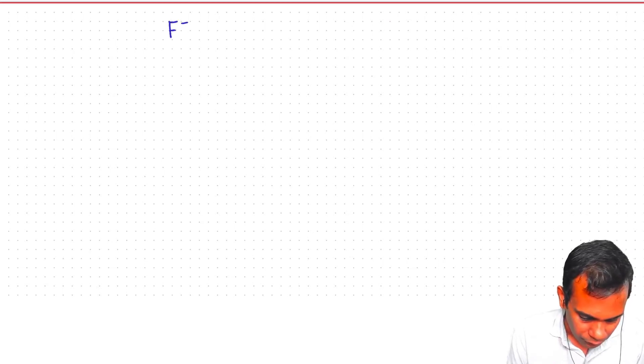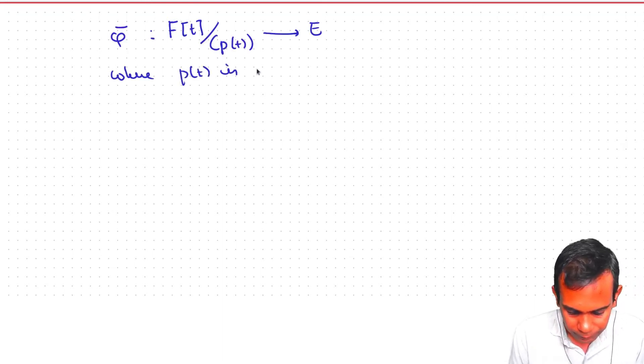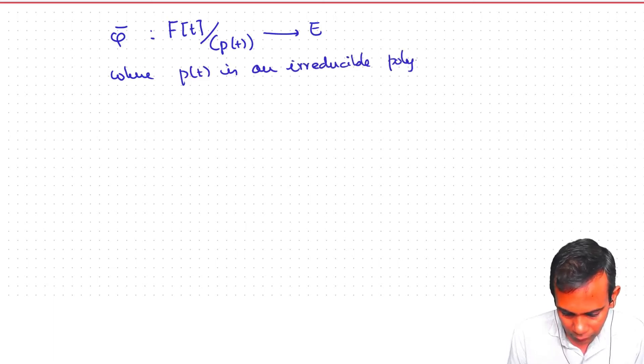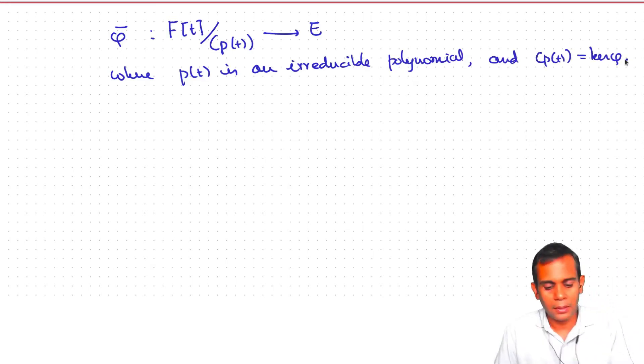So we have Fp[T] mod Pt to E phi bar, where Pt is an irreducible polynomial and Pt generates kernel of phi. So E is isomorphic to Fp[T] mod Pt.